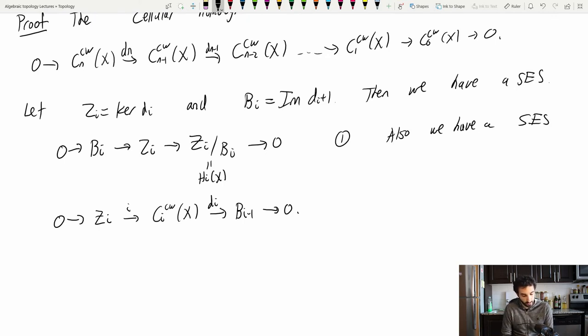And then I can map Ci CW down by di to Bi minus 1, which goes to 0. Now, of course, Zi is the kernel of this di map, right? So that's why this sequence is exact. So I'll call this 2.